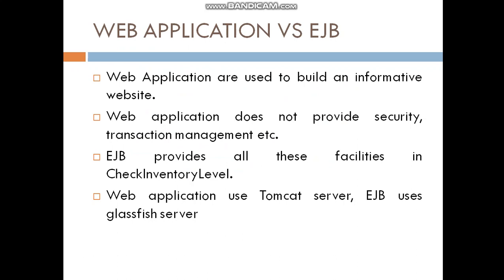The answer is: normal web applications are used to build informative websites. An informative website is one that provides you only information — for example, if you want to view content about a subject like middleware, you type it in Google and get the information, or if you want to download something you type what you want and download it. For such informative websites, we use a normal web application.